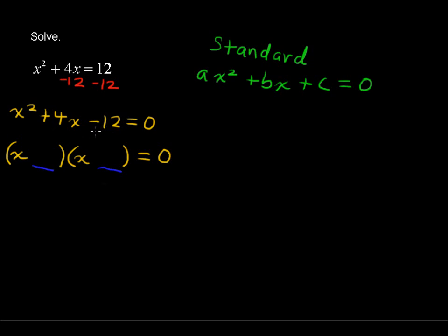2 times negative 6 is close. But 2 plus negative 6 gives you negative 4. I'll write that down. 2 plus negative 6 equals negative 4. So we can't use that one.